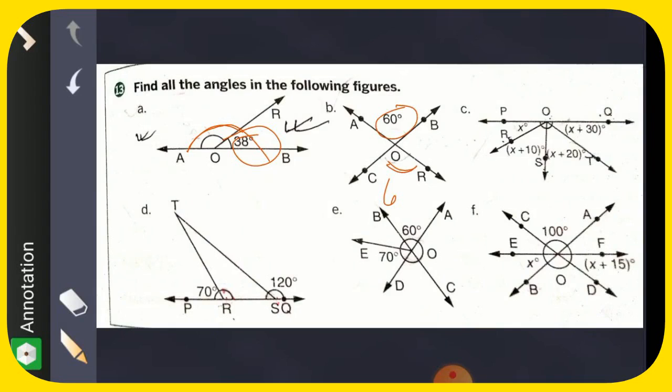And as it is a straight line, so this part will be 180 minus 60, that is 120. If this is 120, this is also 120 because these two are vertically opposite angles.